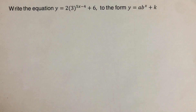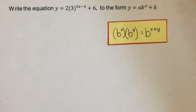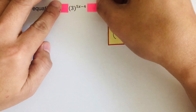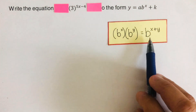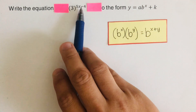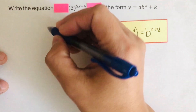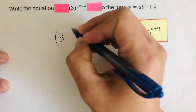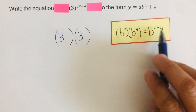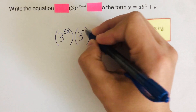We go over the next problem. We will use this property of exponents to change the equation to the form y equals ab raised to the power x plus k. Looking at the exponent part: our base b is 3, the exponent 5x represents the x-part, and negative 4 represents the y-part. So I can break this down — writing 3 twice, distributing the exponents so that 5x goes to the first factor and negative 4 goes to the second.